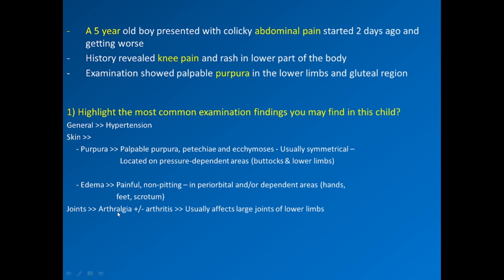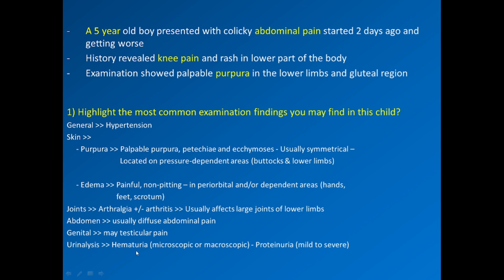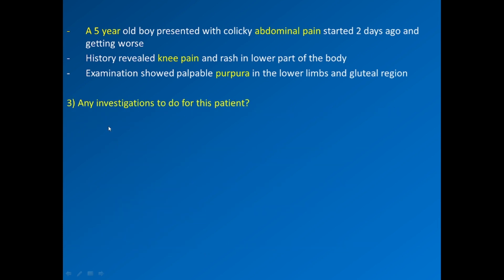Joints usually show arthralgia or arthritis, typically affecting large joints of the lower limbs. Abdomen usually shows diffuse abdominal pain. Genitally, there may be testicular pain. On urine analysis, you can find hematuria and/or proteinuria.